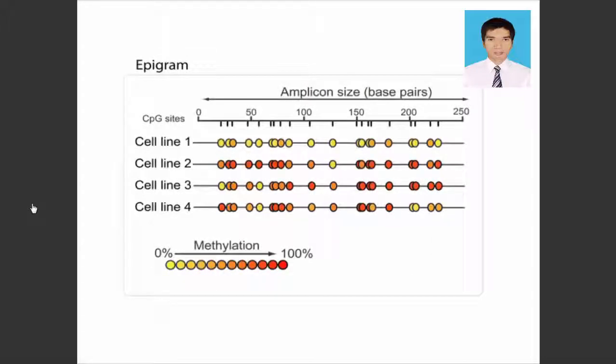A summary of methylation ratios in the sample can then be extrapolated in the form of an epigram, figure 5b. This example shows the percentage of DNA methylation at each CpG site for four different cell lines.